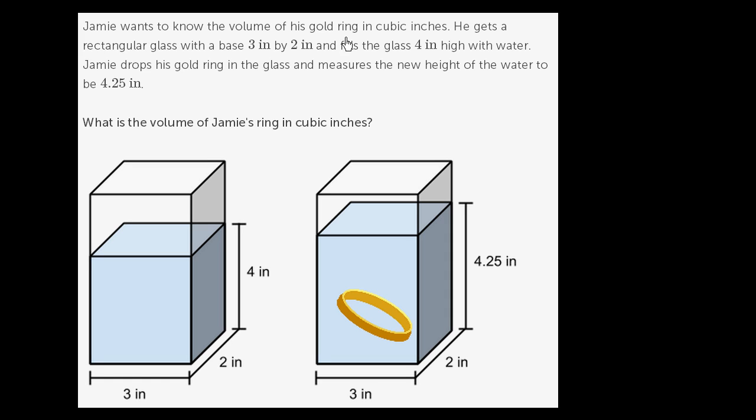Jamie wants to know the volume of his gold ring in cubic inches. He gets a rectangular glass with a base 3 inches by 2 inches.